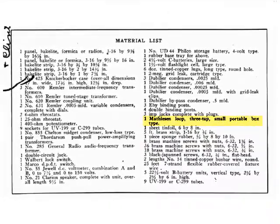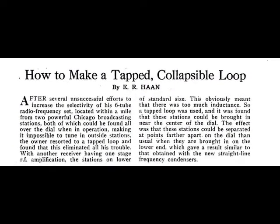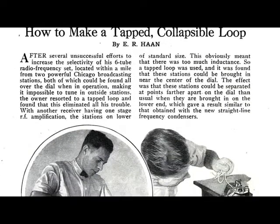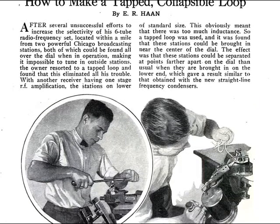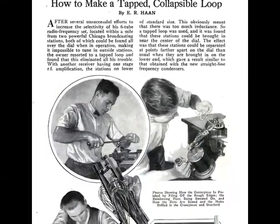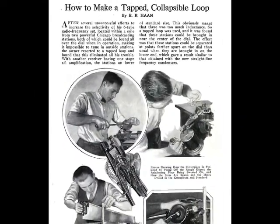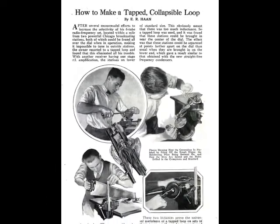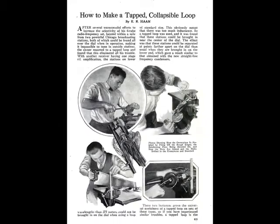A couple of issues after this portable, there was an article about how to make a tapped, collapsible loop by E.R. Haan. His main reason for building one was he lived in Chicago near two powerful stations that were splattering their signal all over the dial, making it impossible to tune anything else. He made a tapped loop that eliminated the trouble, then made it portable so the entire assembly collapses and can be taken anywhere.